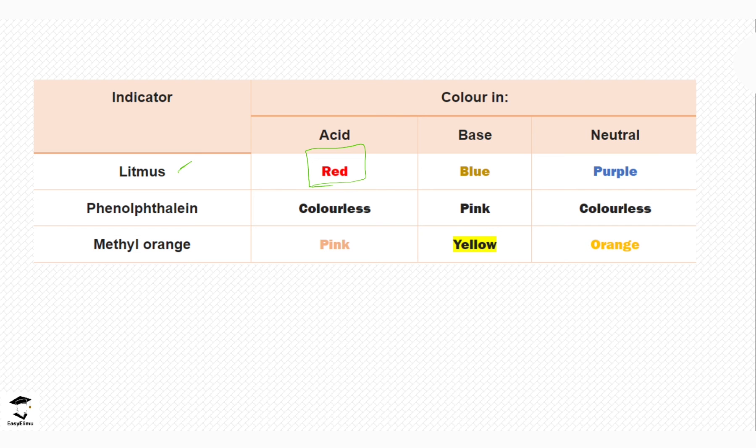When red litmus paper is placed in a basic solution, it turns blue. If blue litmus paper is placed in a base, it remains blue. So blue litmus paper remains blue in base, and red litmus paper turns blue in a basic solution.